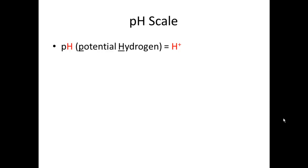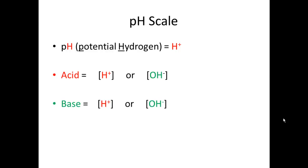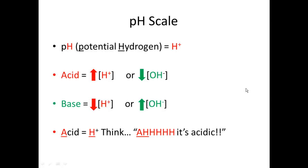pH stands for potential hydrogen — we're measuring the amount of hydrogen in a solution. An acidic solution has a higher concentration of protons than a basic solution, which has a higher hydroxide ion concentration. As a mnemonic: A for acid, H for lots of hydrogen ions. If something's acidic, it's going to burn you.